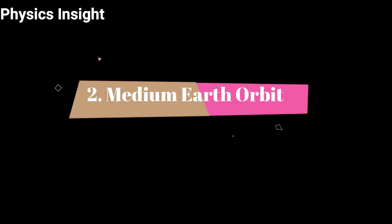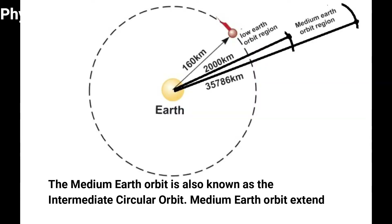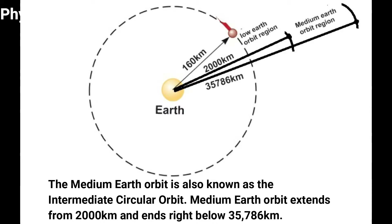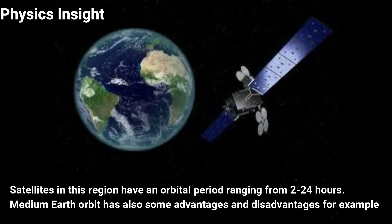Number two: Medium Earth Orbit. The medium Earth orbit is also known as the intermediate circular orbit. It extends from 2,000 kilometers and ends right below 35,786 kilometers. Satellites in this region have an orbital period ranging from 2 to 24 hours.